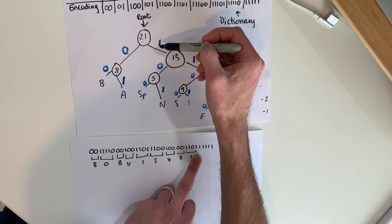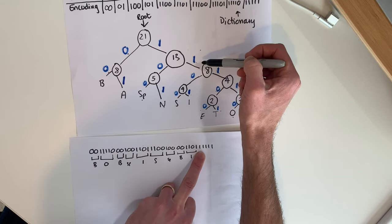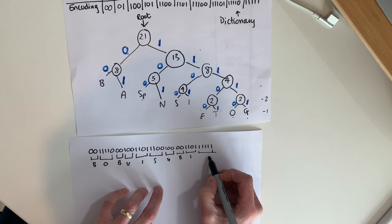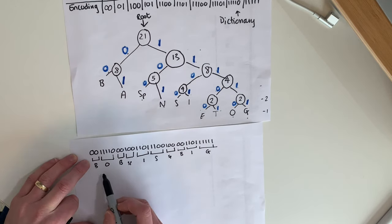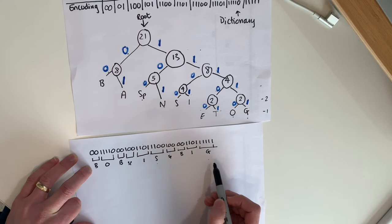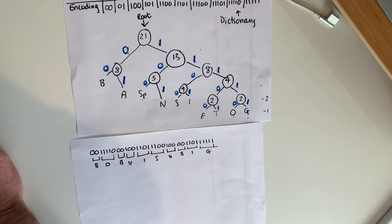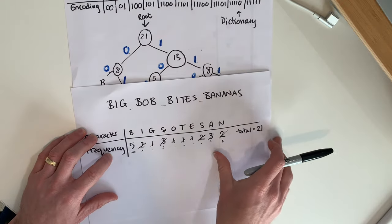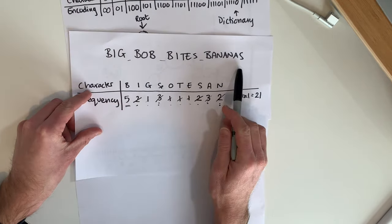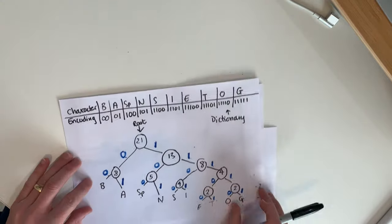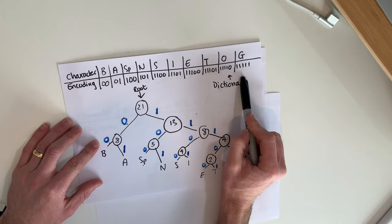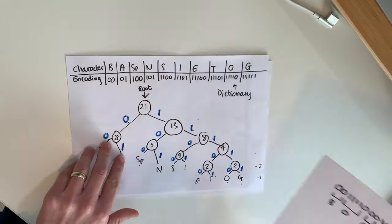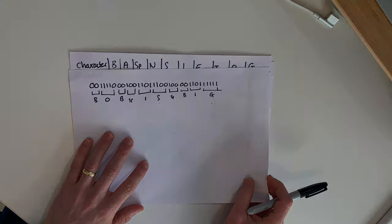Finally, starting again at the root: one, one, one, one, one takes me all the way to the bottom — to the G. So this binary string is decoded as 'Bob is big,' which makes sense because we know the phrase is 'Big Bob Bites Bananas.' That's how we take a string of text, encode it into a Huffman tree, use it to build a dictionary, and from that dictionary encode and decode any message we like. Thank you.